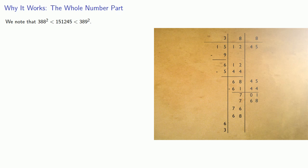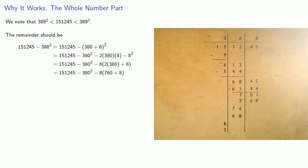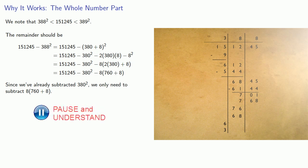Again, we note that 388 squared is less than our radicand, which is less than 389 squared. If we find the remainder, we've already subtracted 380 squared, so we only need to subtract 8 times (760 + 8). When we multiply that out and break our number into cycles of two digits, we see that that's the last subtraction.